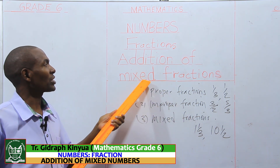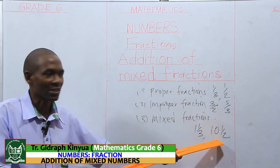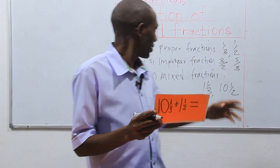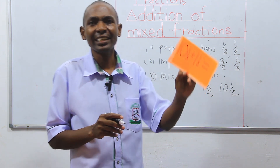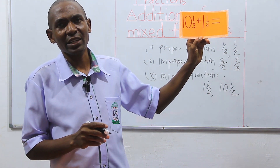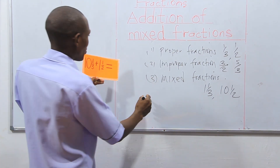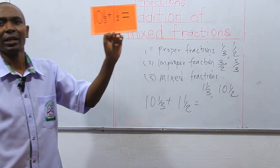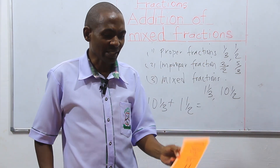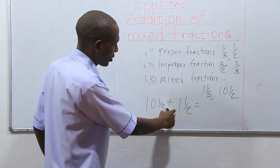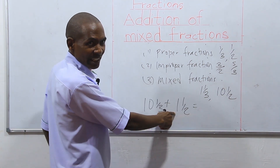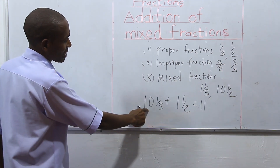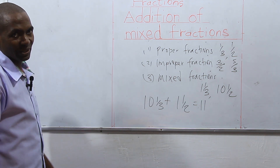Today we'll talk about the addition of such types of fractions. We want to start by giving examples of addition of mixed fractions. The first one is ten and a third plus one and a half. In this case, we are supposed to add the two whole numbers. So you add ten plus one, and you are getting eleven.